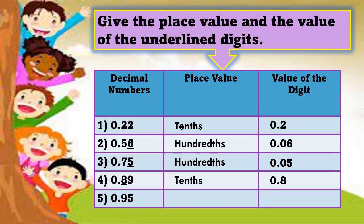And the last number: 0.95. And the underlined number is 9. What is the place value of 9? Correct — tenths. And the value of the digit is? 0.9.